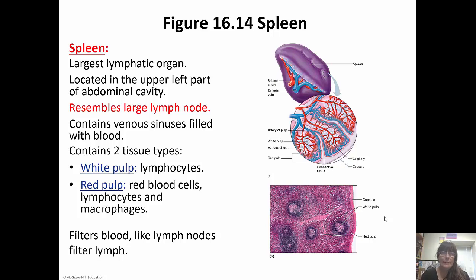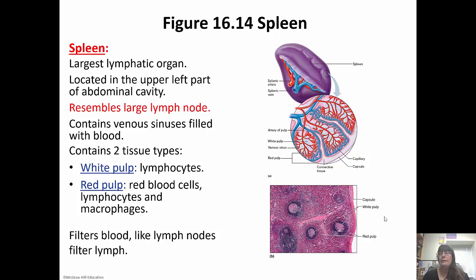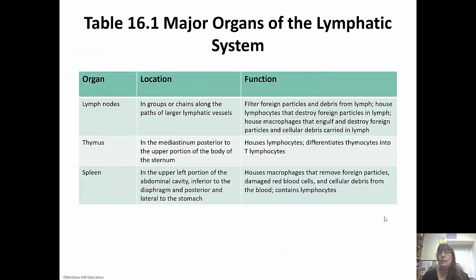The spleen is the largest lymphatic organ, located in the upper left part of the abdominal cavity. It looks like a large lymph node but has two venous sinuses filled with blood to filter the blood. There are two tissue types: white pulp, which has lymphocytes, and red pulp, which has red blood cells, lymphocytes, and macrophages. The spleen filters out and recycles dead and worn-out red blood cells — it filters the blood the way lymph nodes filter the lymph. A chart summarizes the lymphatic organs, their locations, and their functions.